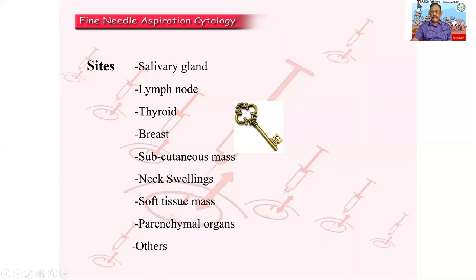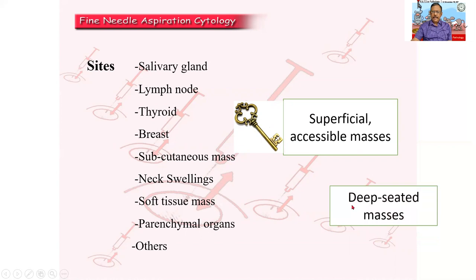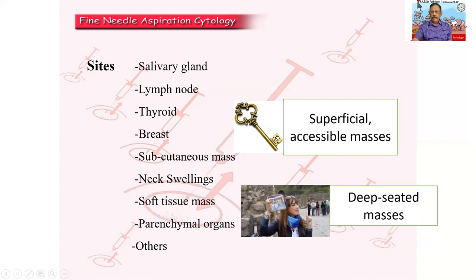What is common to all these sites? They are all superficial and accessible masses — remember this and you will be able to recollect the entire list. Also, it can be a deep-seated mass. When I go to an unknown place, I need a guide — so this is called guided aspiration. For retroperitoneal lesions, I will have to do a guided aspiration — ultrasound guided, etc.